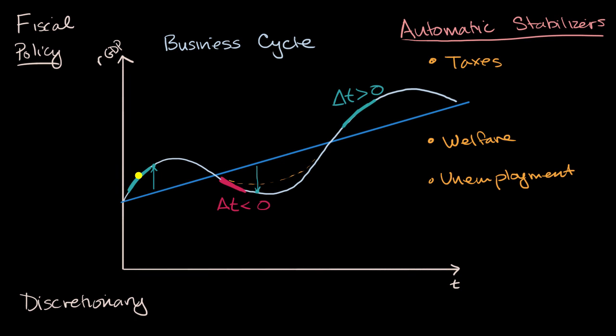And so in that world, that is like a decrease in government spending. The government's not going to have to pay for these benefits. And so a decrease in government spending, that's contractionary. And so that'll help smooth out the curve a little bit.